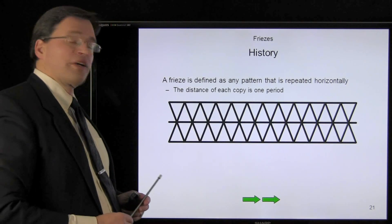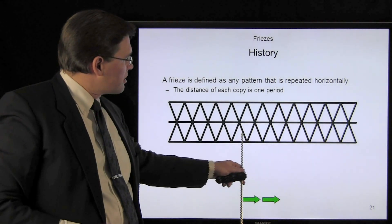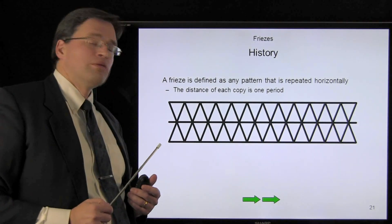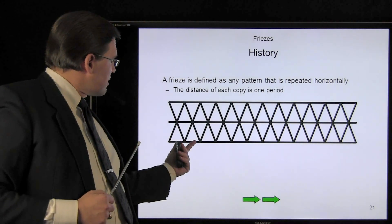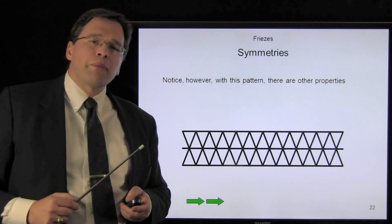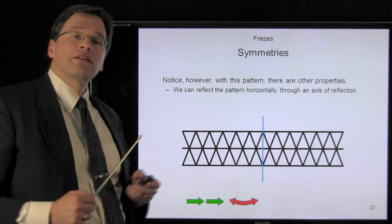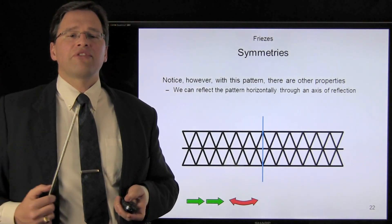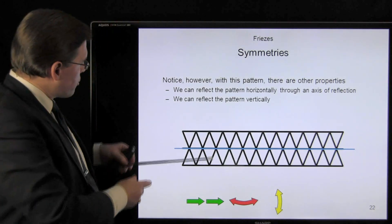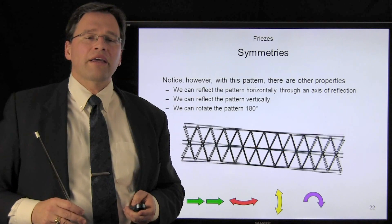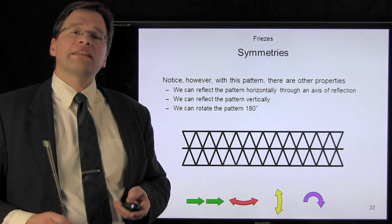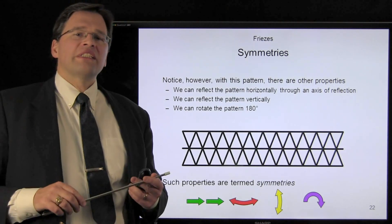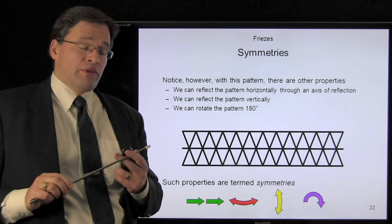Here we see the artist copying a sequence of lozenges. We can translate each lozenge over one period to make another copy right next to it — this distance is said to be one period. However, there are other properties as well. We can take this pattern and reflect it horizontally and get back the same frieze. We can reflect the pattern vertically through a line and get the same frieze back. And we can also rotate it 180 degrees and get the exact same frieze back. These properties are called symmetries, and we're going to be able to describe friezes by what symmetries they have and what symmetries they do not have.